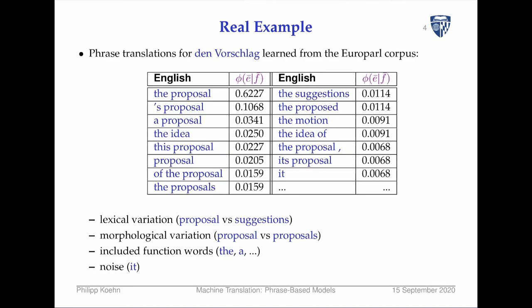Here's a bunch of examples of translations for a phrase from a real example. We took the German phrase 'den Vorschlag' and learned the phrases from the European Parliament corpus. These are the top translations. 'The proposal' stands out strikingly at 62% probability.